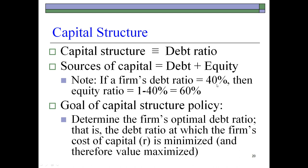A debt ratio of 40% means, for example, that if the firm's total capital is $100 million, 40% of that would be $40 million, meaning that the firm borrowed $40 million of the $100 million. The remaining $60 million is raised in the form of equity, typically common equity. The goal of capital structure policy is to determine the firm's optimal capital structure.